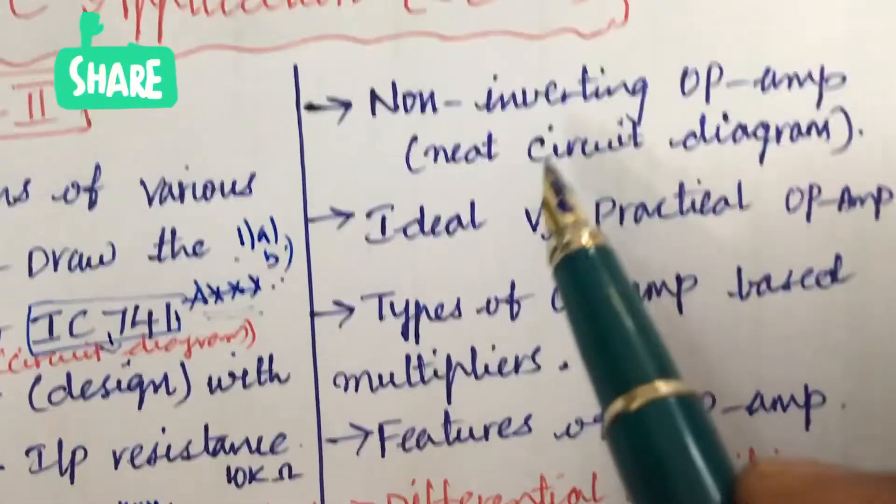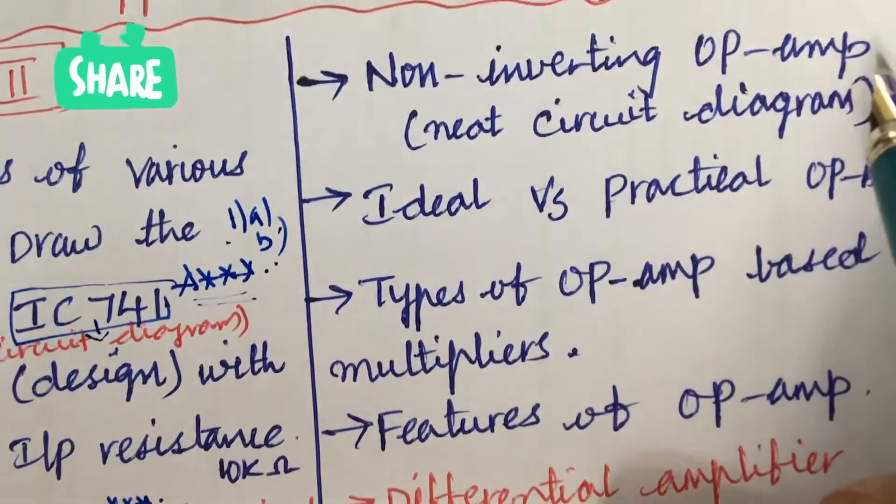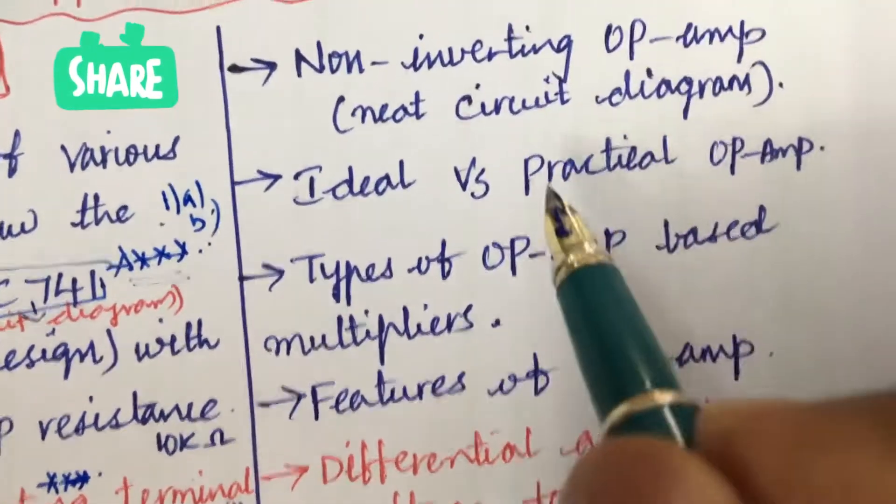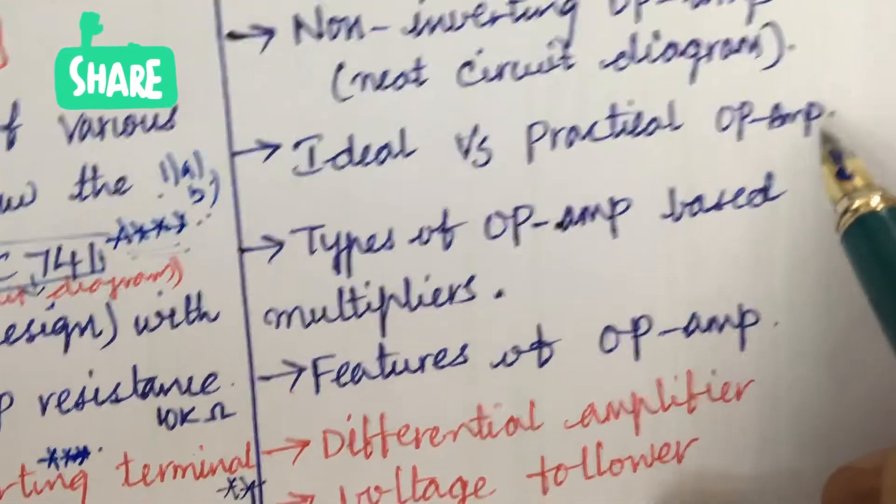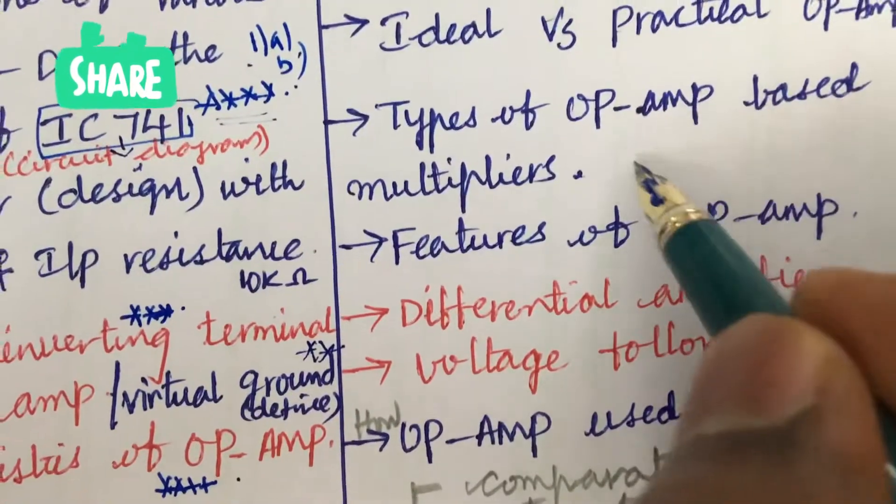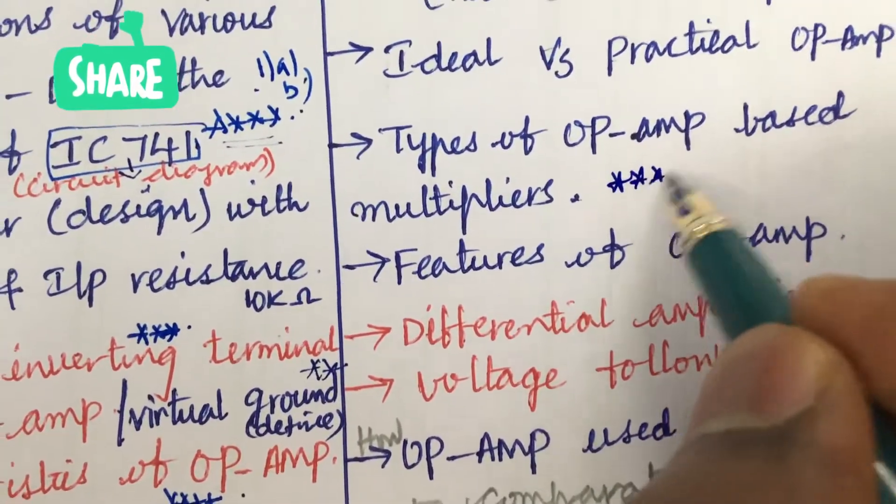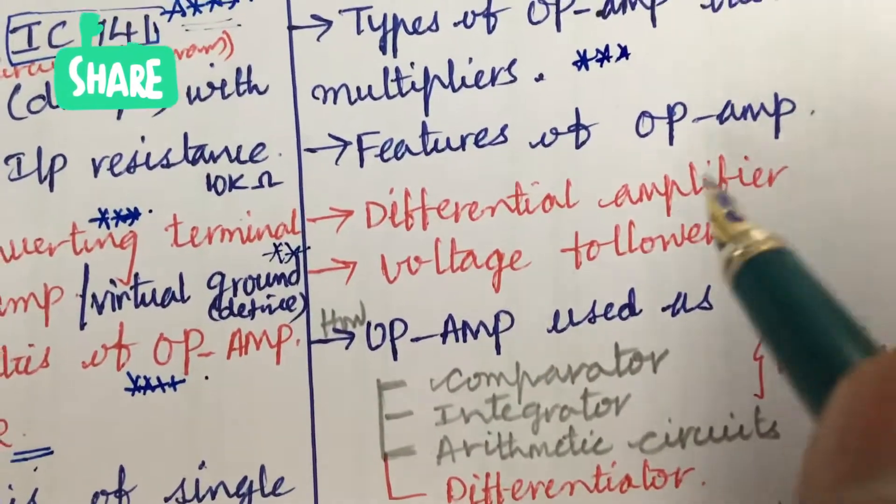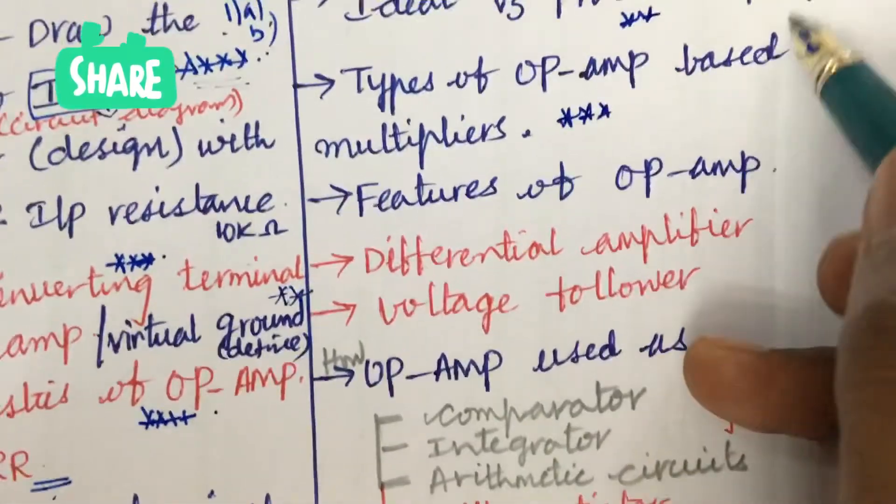5 combination and non-inverting OP AMP with the neat circuit and diagram, explain ideal versus practical OP AMP differences, and types of OP AMP based multipliers is also one of the very important and gunshot questions. And the features of OP AMP and the differential amplifier and voltage follower.